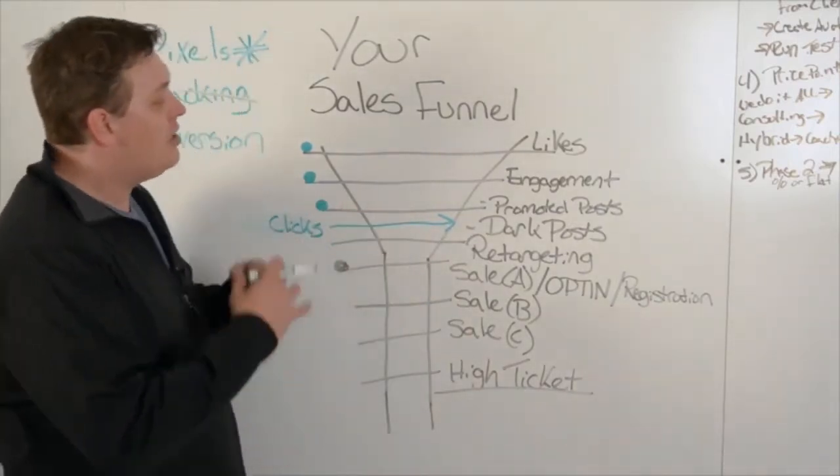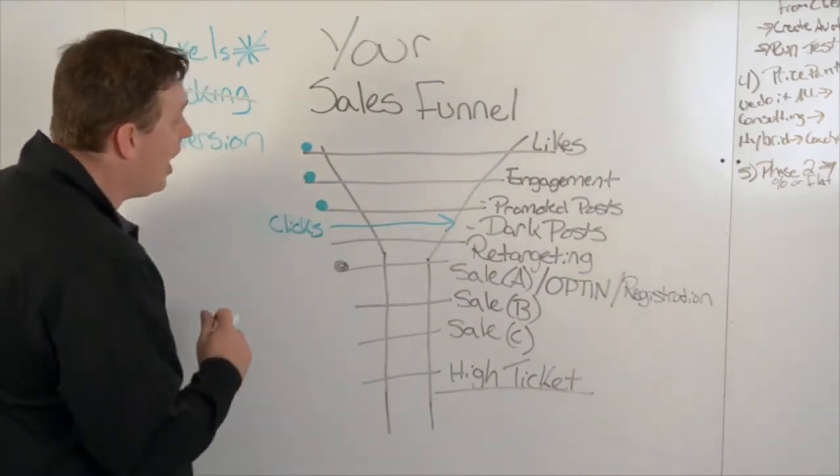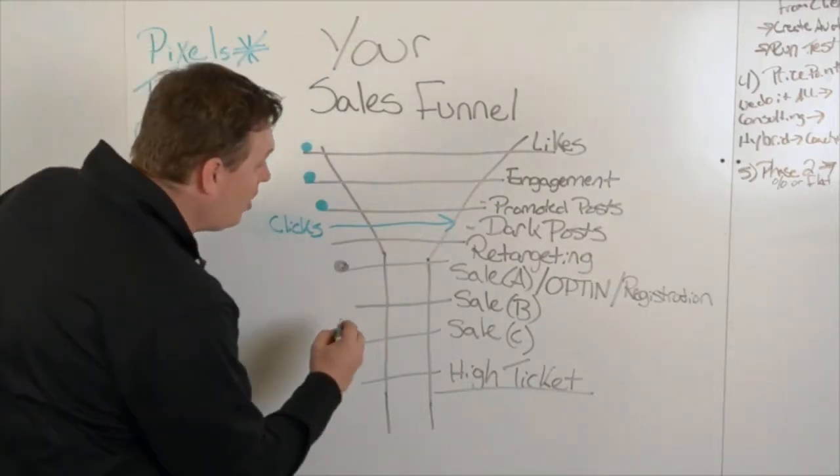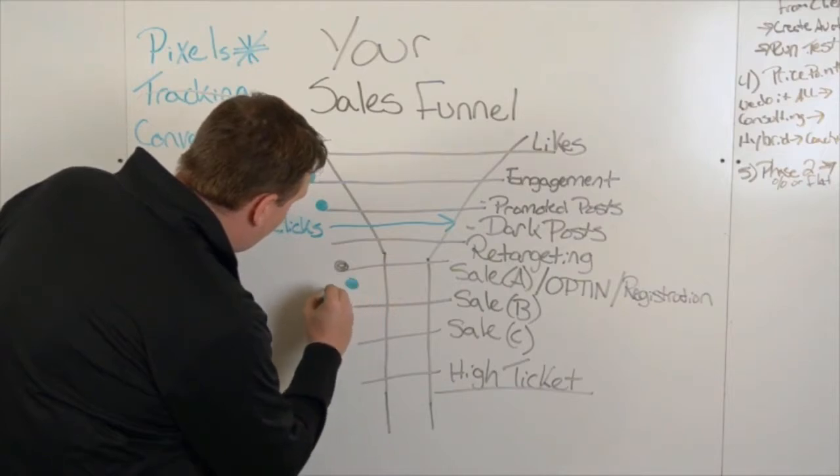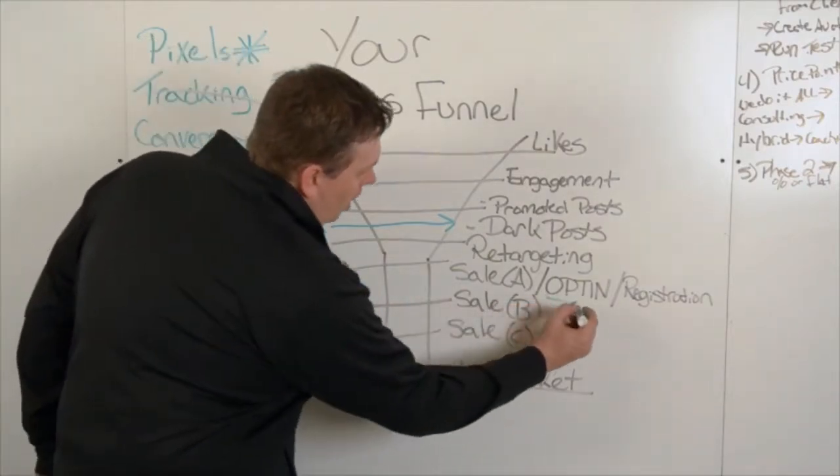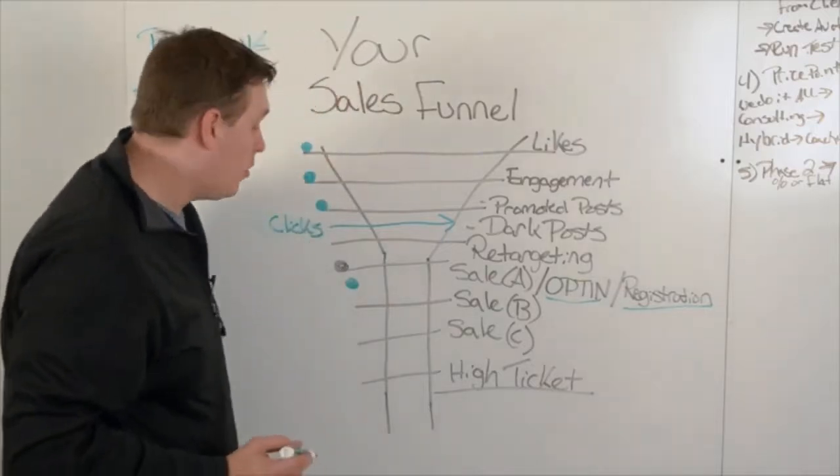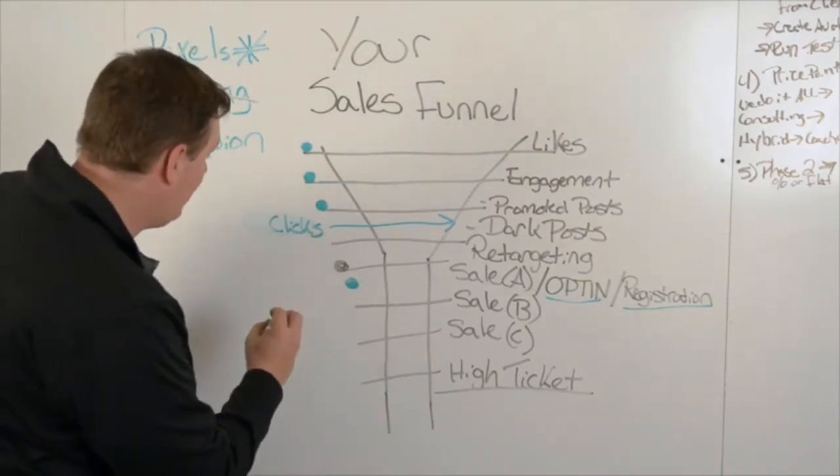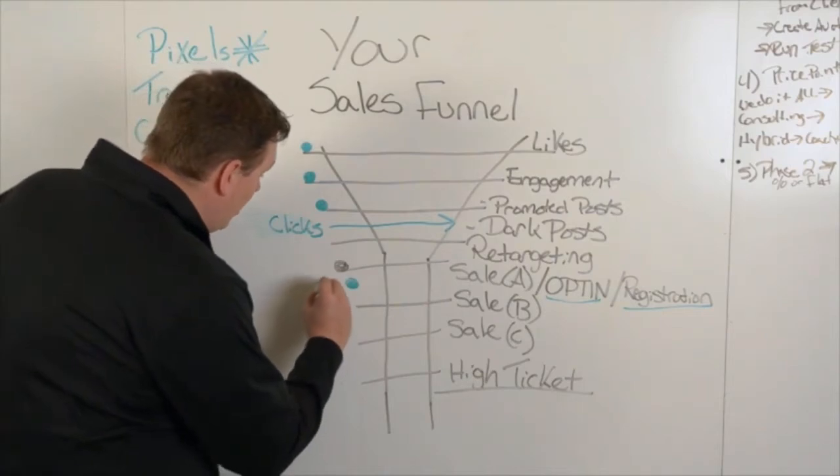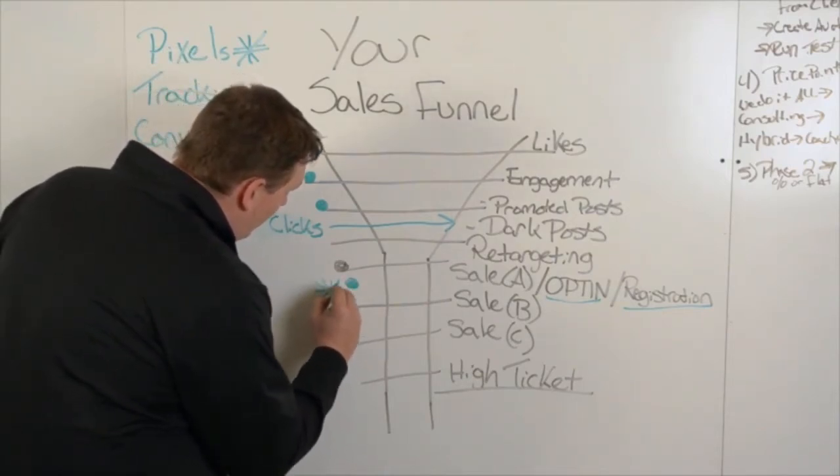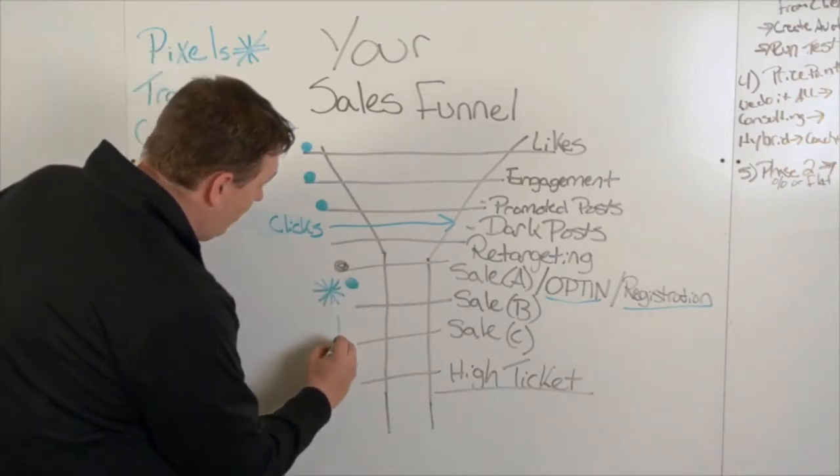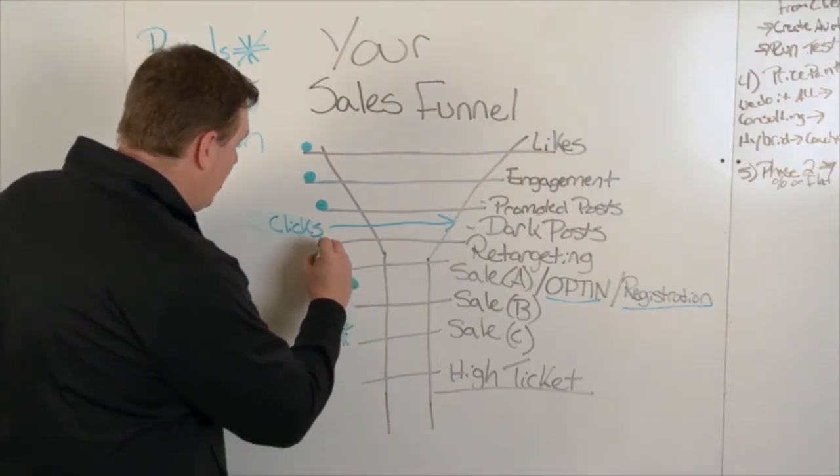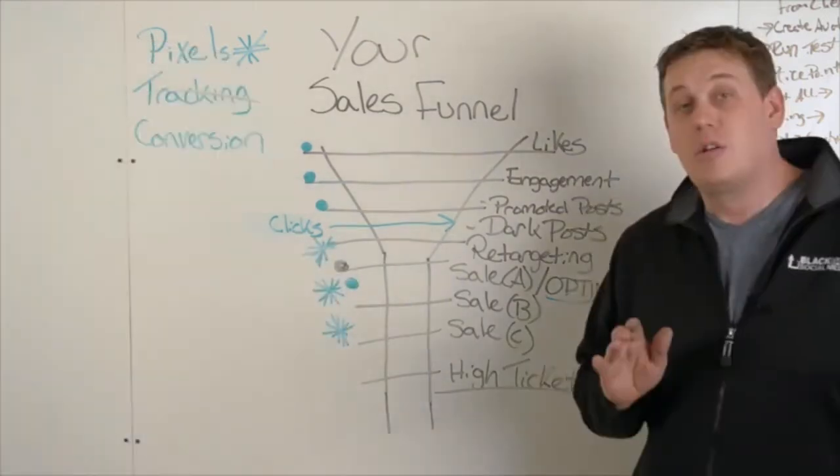Because when they click on it and it's in their news feed, it's going to go over to my website. I can also tell Facebook, I want you to use this dark post and I want you to go find as many sales or opt-ins or registrations to an event or a webinar. I want you to go out and find as many as possible. What happens is, and many people think this is a tracking pixel, you can actually install this pixel right here on the sale, on the opt-in. The other thing is you can place the pixel for retargeting.